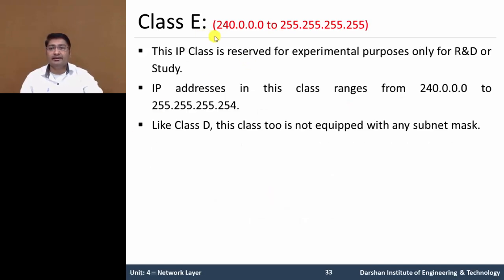The range of Class E is 240.0.0.0 to 255.255.255.255. This class is reserved for experimental purposes only — used for Research and Development or Academics. IP addresses in this class range from 240.0.0.0 to 255.255.255.255. Class E is not equipped with any subnet mask. These are the 5 categories of IP addresses: Class A to Class E.